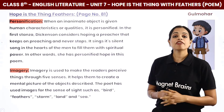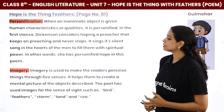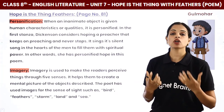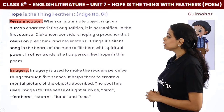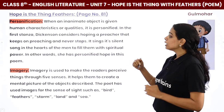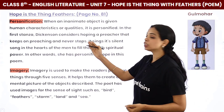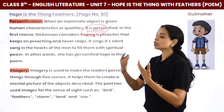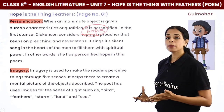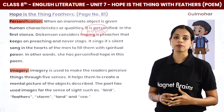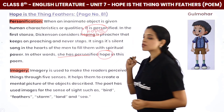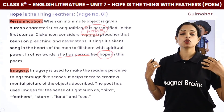Then we have personification. When an inanimate object is given human characteristics or qualities, it is personified — when you give a non-living thing the attributes of a living thing, we say it has been personified. In the first stanza, Dickinson considers hope as a preacher that keeps on preaching and never stops. Hope is treated like a bird that preaches and never stops. It sings its silent song in the hearts of men to fill them with spiritual power. In other words, she has personified hope in this poem — hope is not asking for anything, it is acting like a person.